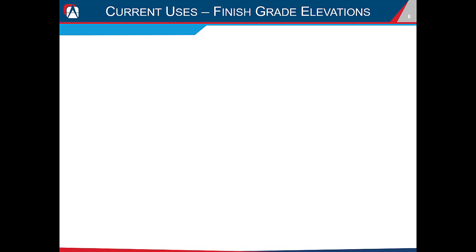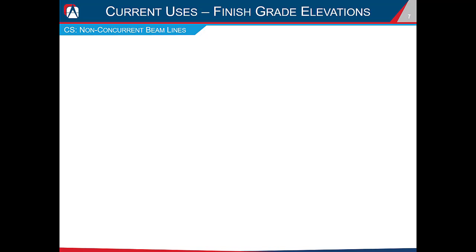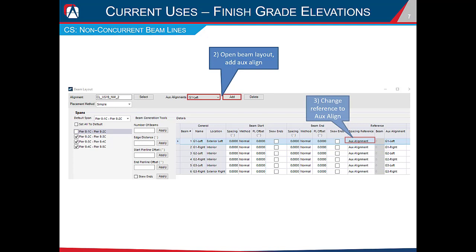That's a good example of controlling the deck to get finish grade elevations for complex geometry. But what about controlling girder finish grade elevation points for complex beam geometry, such as girders that don't follow the alignment? The answer is the same — auxiliary alignment references. The first step is to create your auxiliary alignments using civil tools, not plain smart line tools. Then open the beam layout, add auxiliary alignments, change the beam reference type to auxiliary alignment, and select the appropriate alignment. Your beam lines will then follow those auxiliary alignment lines.